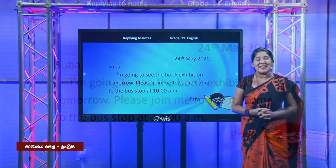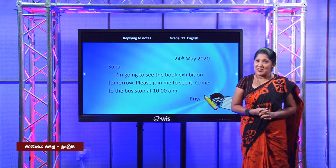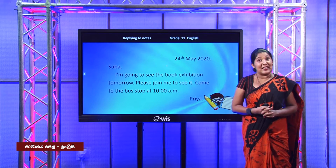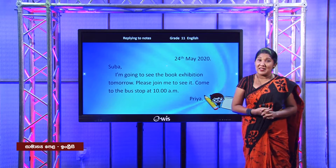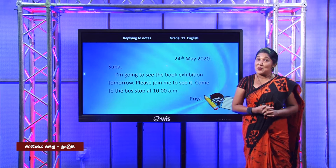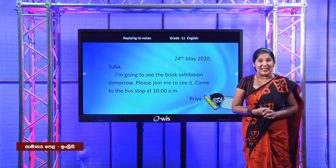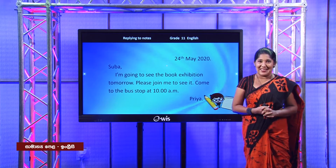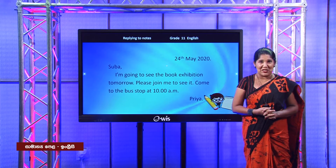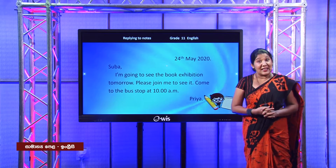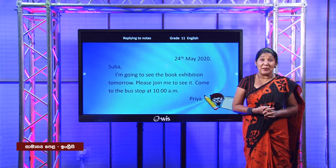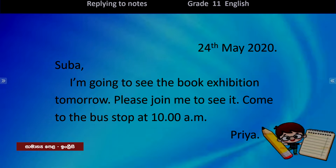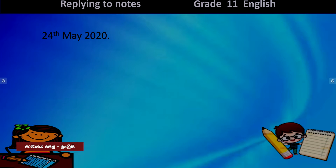It is a very simple note that Priya has written to Subha. As you know from the conversation, Subha has got her mother's permission and Subha is also willing to go to see the exhibition. Of course, Subha is going to accept the invitation. As I said at the start of the lesson, you will be learning to write to accept invitations, and now we see how Subha does it.